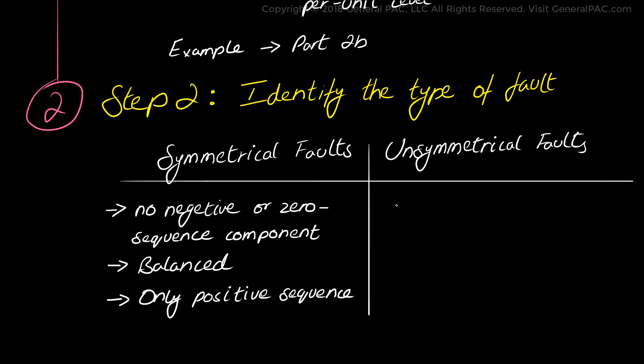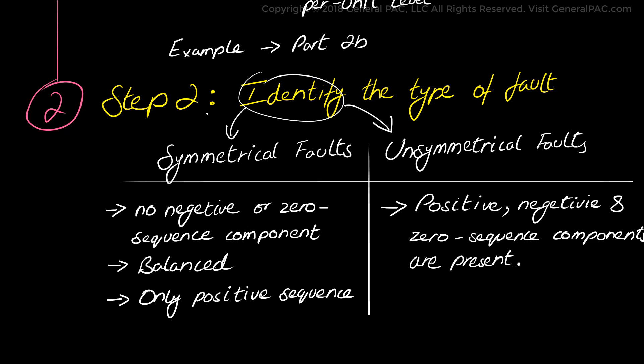And on the other hand, there are unsymmetrical faults that mandate the calculation of positive, negative and zero sequence components separately. And because of these different types of faults that occur in power systems and their different characteristics, we really have to identify the type of fault that is being analyzed. Because the remaining steps are dependent on it.